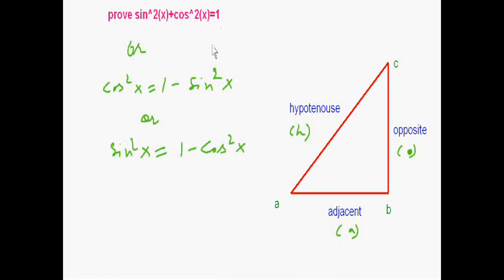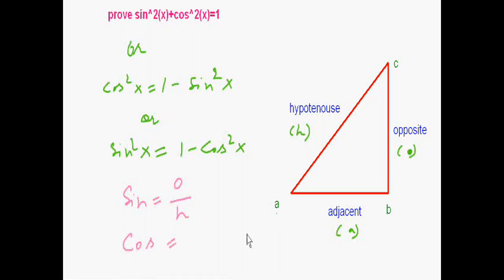Either we have to prove this or this or this. We use fundamental principles — we know that sin and cos are just relationships between the three sides: sin is opposite divided by hypotenuse, and cos is adjacent divided by hypotenuse.